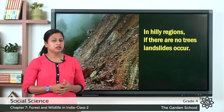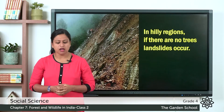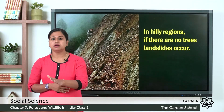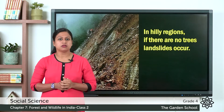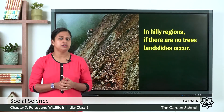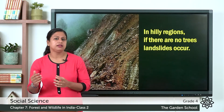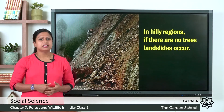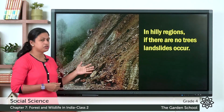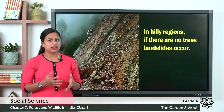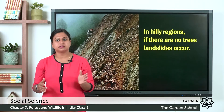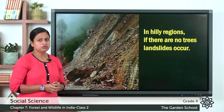Next point is, in hilly regions if there are no trees, the rain water washes away the top layer of the soil. And we know that the top layer is very rich in nutrients that helps plants and trees to grow. This results in landslide. You can see here the picture of landslide. Landslide means a heavy fall of earth or rocks down the sides of the mountain.